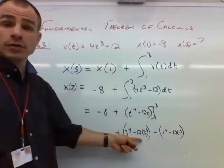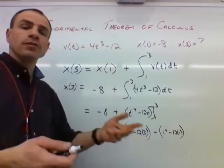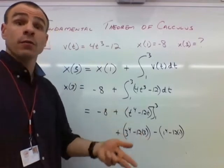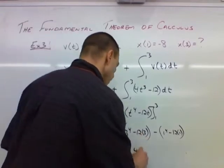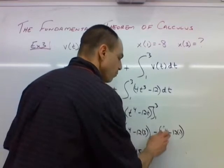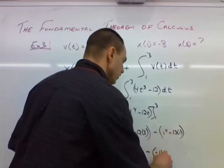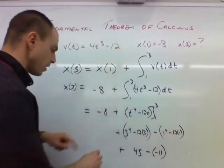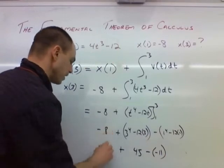So we have 81 minus 36. 81 minus 30 is 51, minus 6 more gives us 45. So we have 45 right here. And then 1 minus 12, so that's negative 11. And then don't forget, our initial condition has kind of just been hanging out here the whole time.